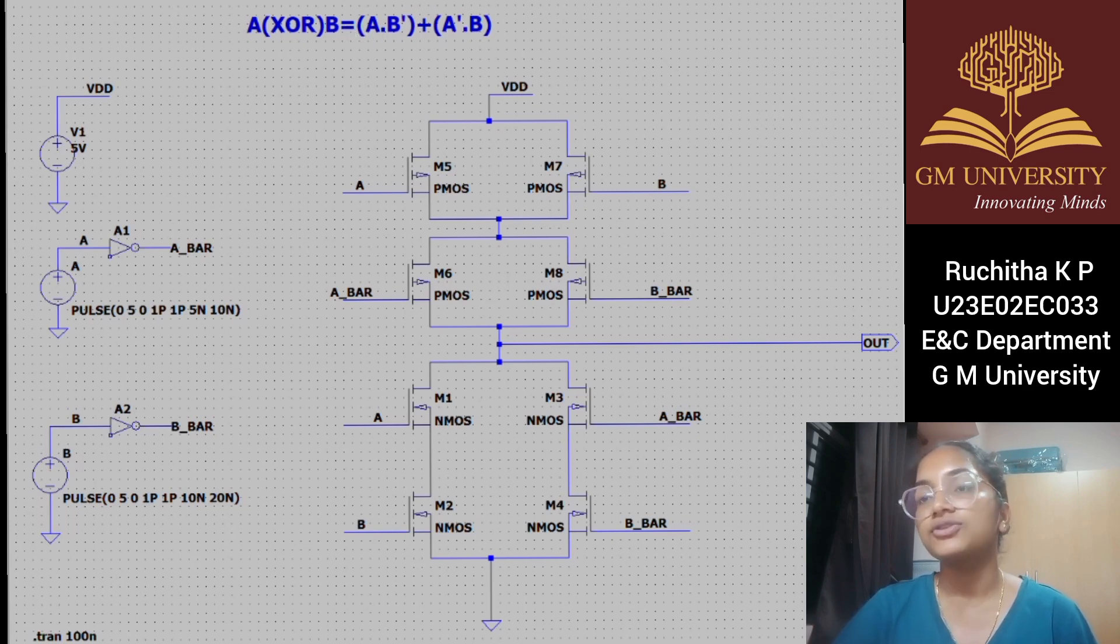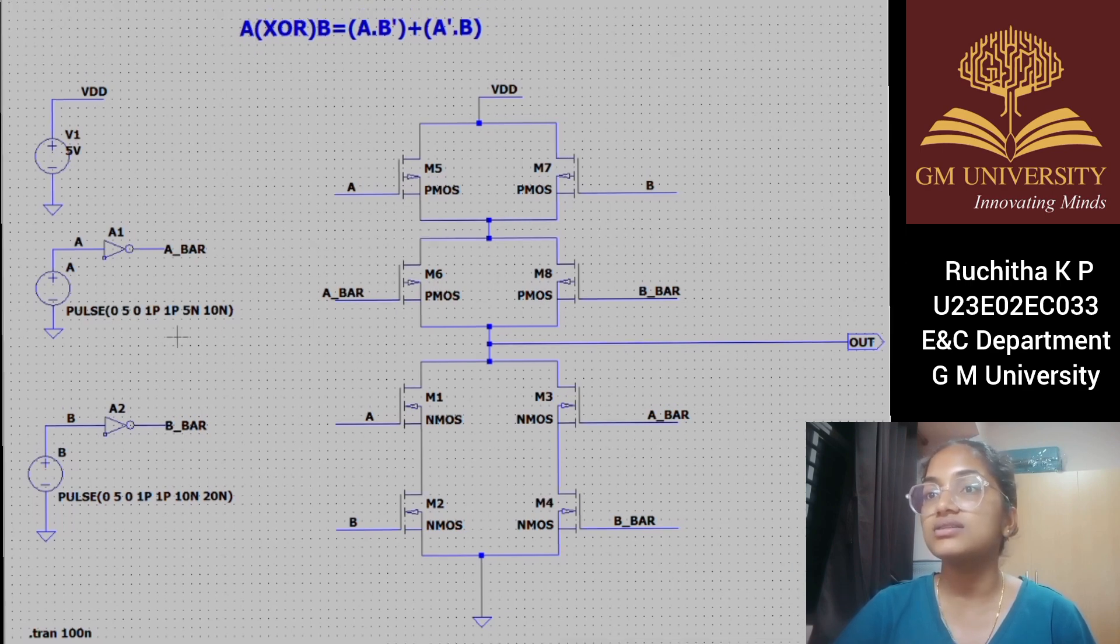The goal is XOR A and B. We have two pulse generators creating signals A and B, and two inverters that generate complements A bar and B bar.